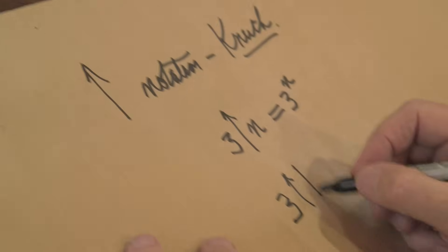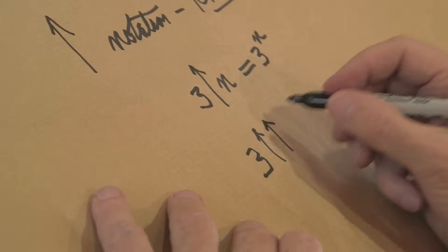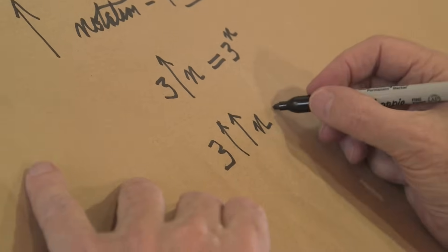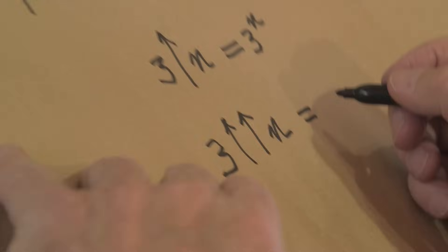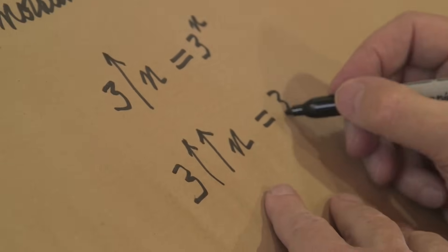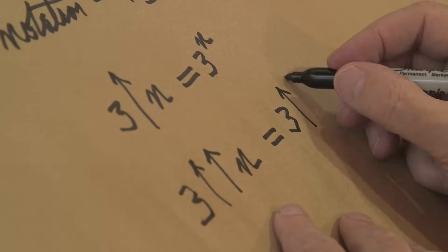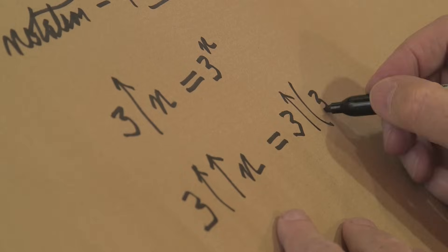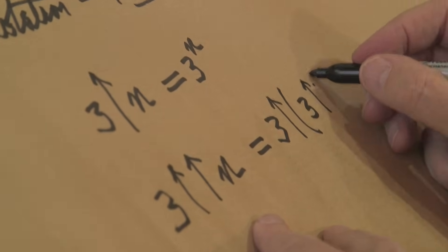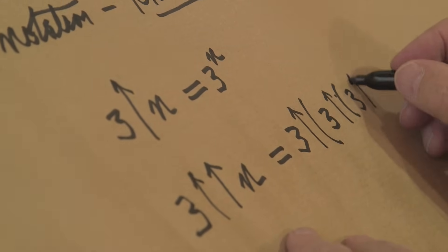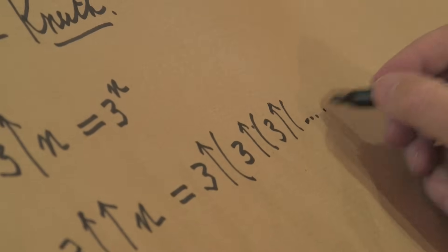What do you mean by 3, two arrows, n? Well, what that means is 3 to the arrow of 3 to the arrow of 3 to the arrow of dot dot dot dot dot — continuing on like that.